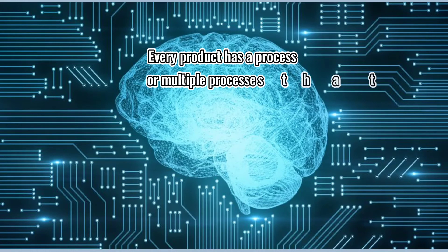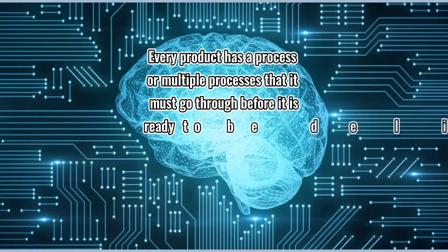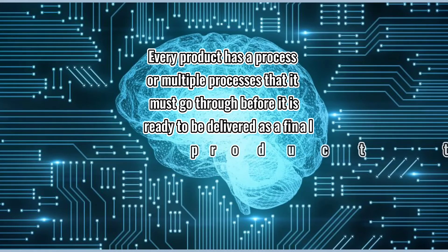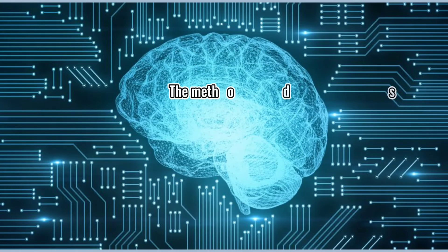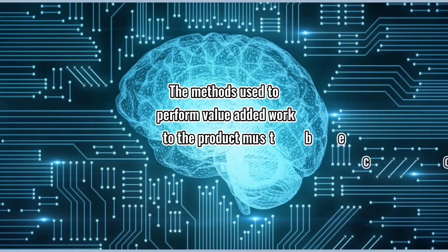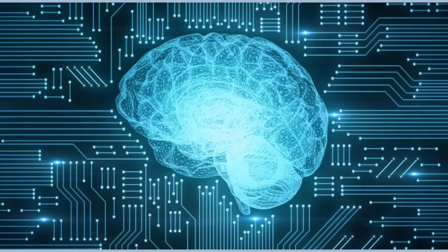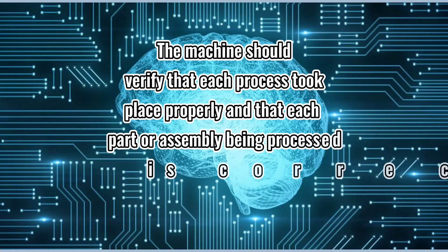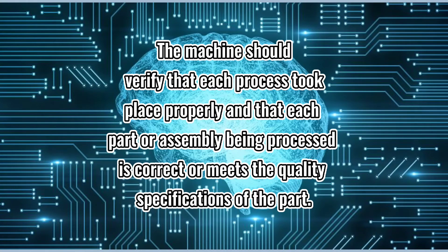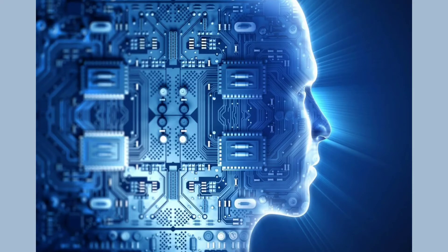Every product has a process or multiple processes it must go through before it is ready to be delivered as a final product to a customer. The methods used to perform value-added work must be consistent and controlled. The machine should verify that each process took place properly and that each part being processed meets the quality specification. The business plans the overall process from brainstorming up to implementation.